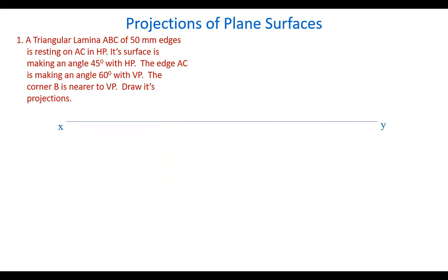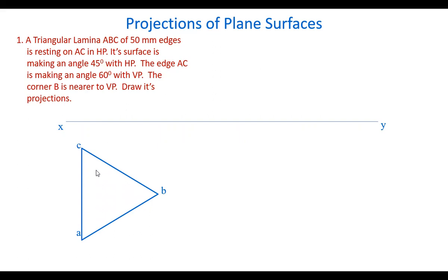Take the plane in the horizontal plane because the surface is making 45 degrees angle with HP — that's why we take it either parallel to HP or in HP. Since it is resting on edge AC in HP, the plane is taken in HP itself. The edge AC is taken perpendicular to the reference line. When you want an edge resting in HP, one edge must be perpendicular to VP; only then will we get that particular edge in the horizontal plane.